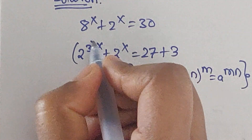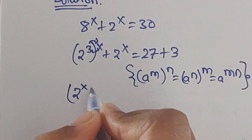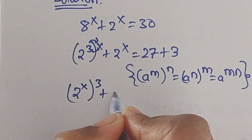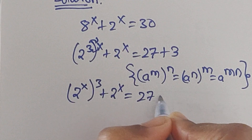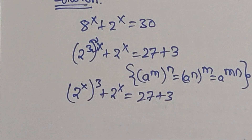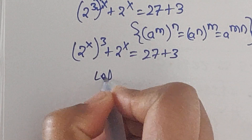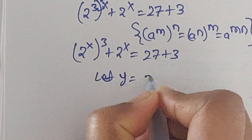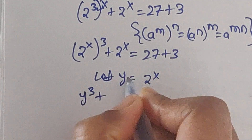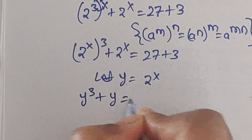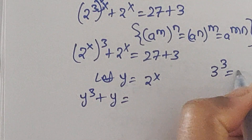Applying the formula, we can write 2 to the power of x, whole to the power of 3, plus 2^x equals 27 plus 3. Now let us consider y equals 2^x, so y³ plus y equals 27 plus 3.